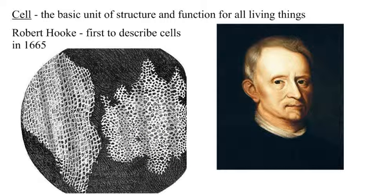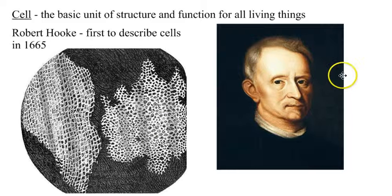His big conclusion was that the reason cork floats is because these little pockets actually contain air. Now what Hooke didn't realize at the time was that he was really looking at dead cells — all he was seeing were the cellulose cell walls of cork. Robert Hooke gets credit because he's the first guy to write it down.